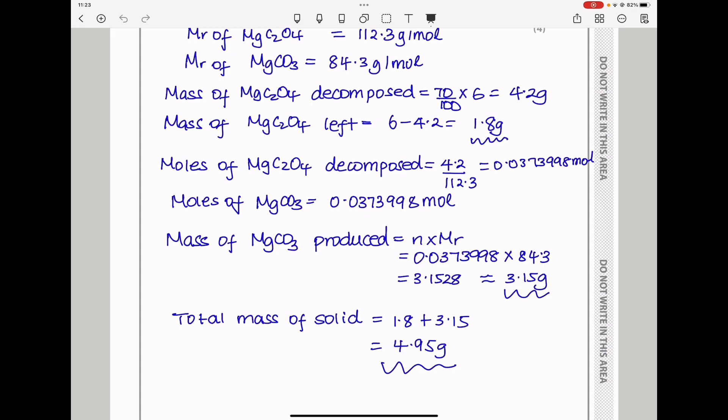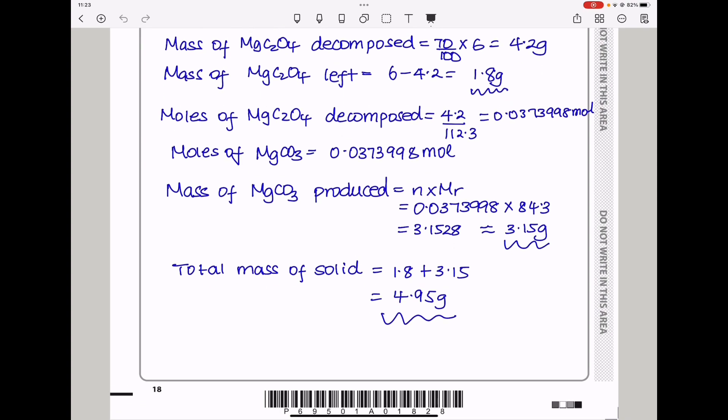And therefore the mass of magnesium carbonate is going to be the number of moles times molar mass, which is that, times 84.3, and the answer I got was 3.1578, rounded off to 3.15 grams. So the total mass left is the undecomposed magnesium ethane-di-oate plus the produced magnesium carbonate. So I added that, and the answer became 4.95 grams, as required.